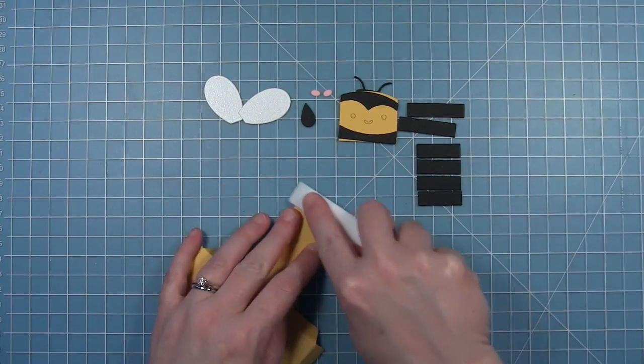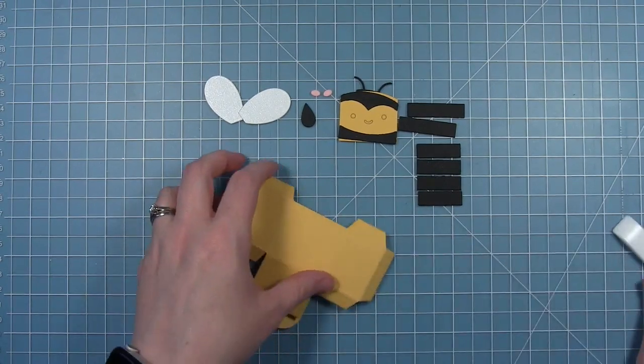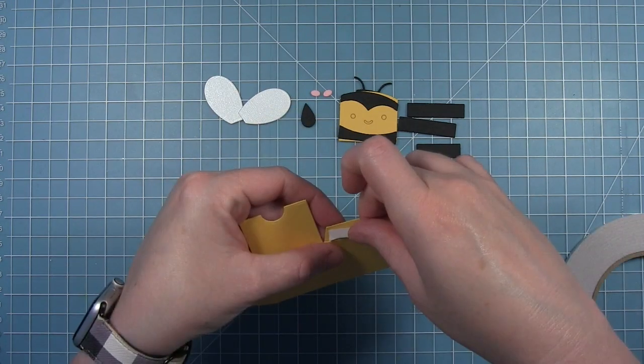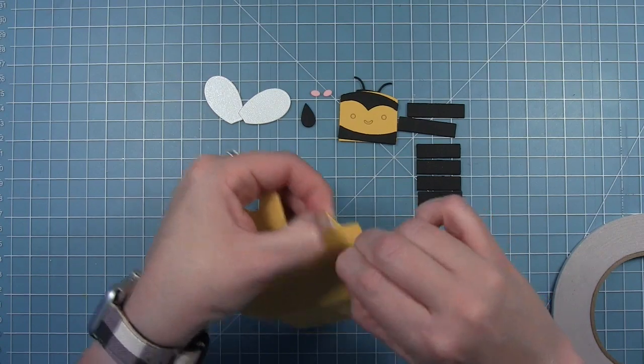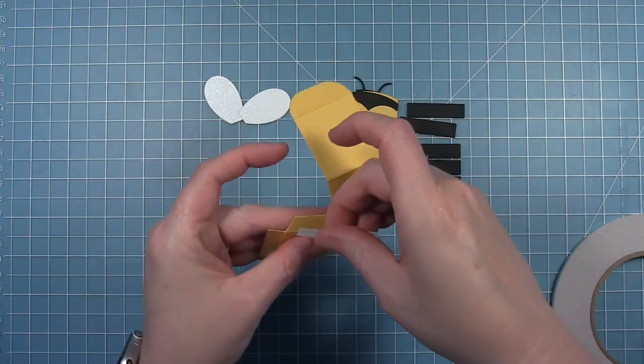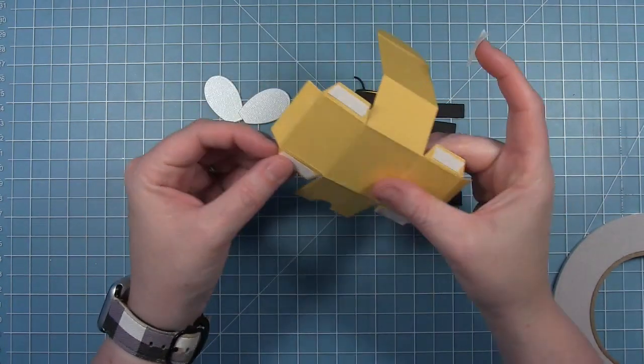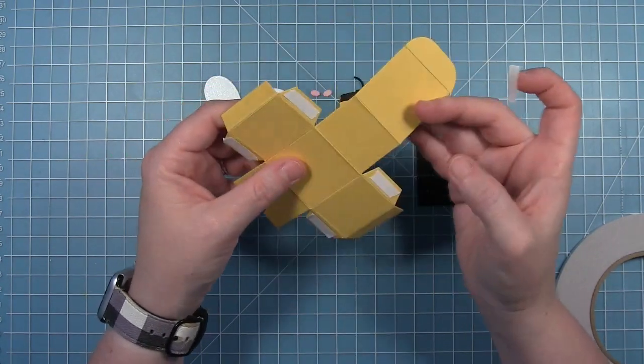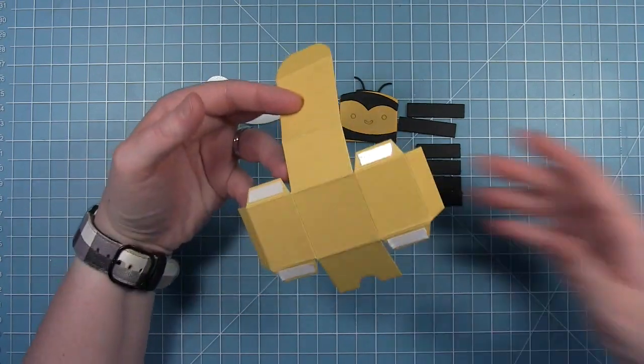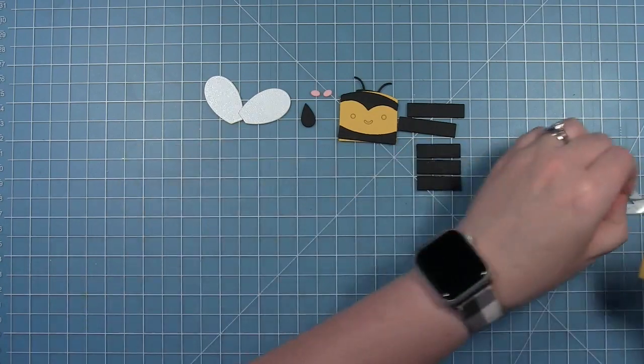Once I have all these folds folded, I can add some double-sided tape to the tabs that need to adhere together to create the box. These four little tabs on the side, I'm just going to put a little piece of double-sided tape on each of them. Then we can just peel off that liner paper and assemble our box before we start to decorate it.